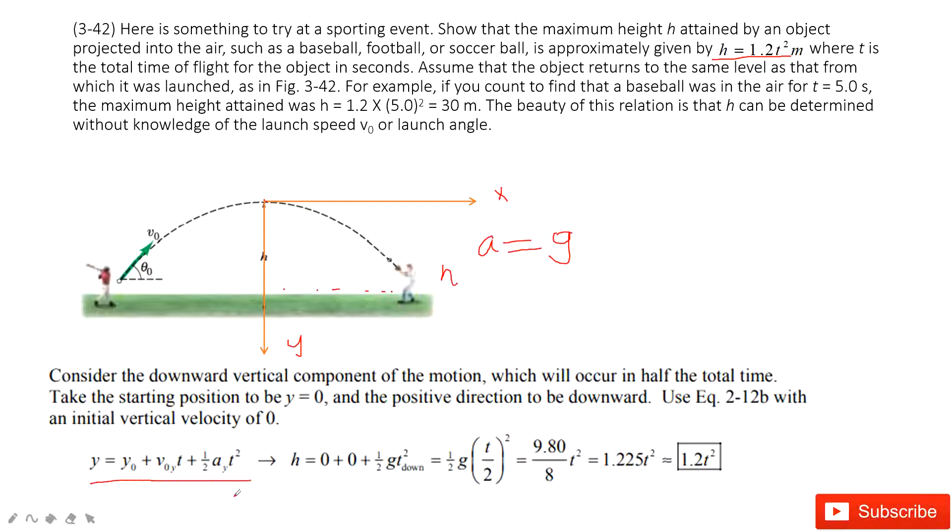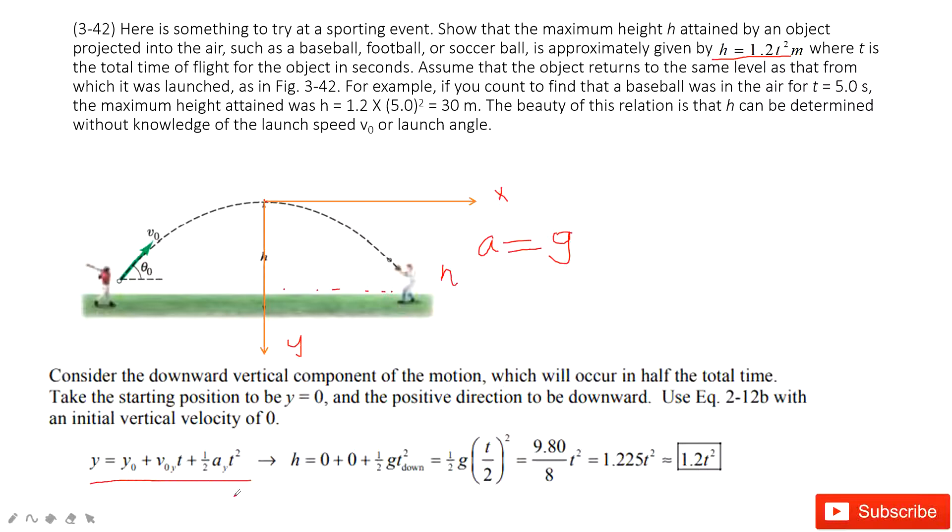So in this one, we can use this equation to solve this problem. The initial position is 0, initial velocity at y component is 0, and acceleration is g. In this equation, we can get y. But please remember, this time t is the total time of the flight for the object in seconds.